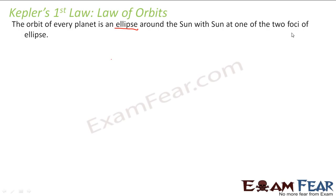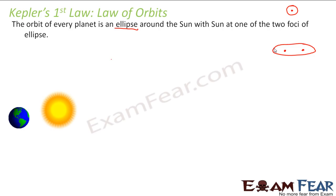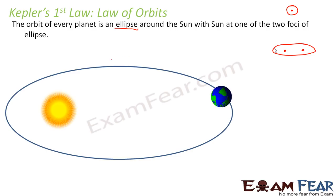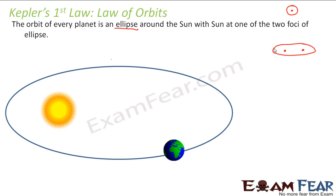An ellipse looks somewhat like a stretched circle. While a circle has a single center, an ellipse has two foci. The sun lies at one of these foci, and the planets move in elliptical orbits. For example, the Earth moves in an elliptical path with the sun at one of the focus points.